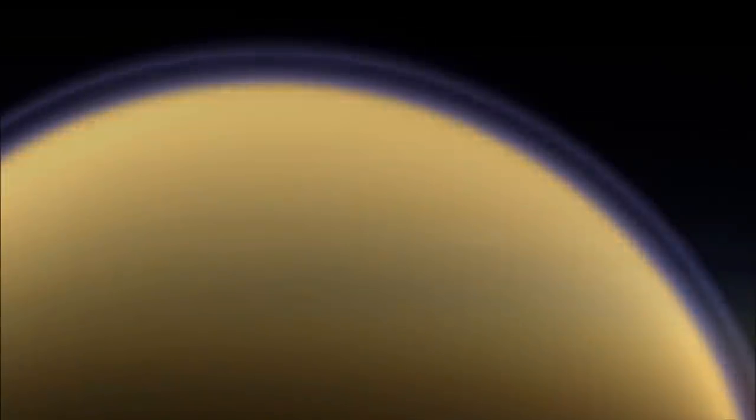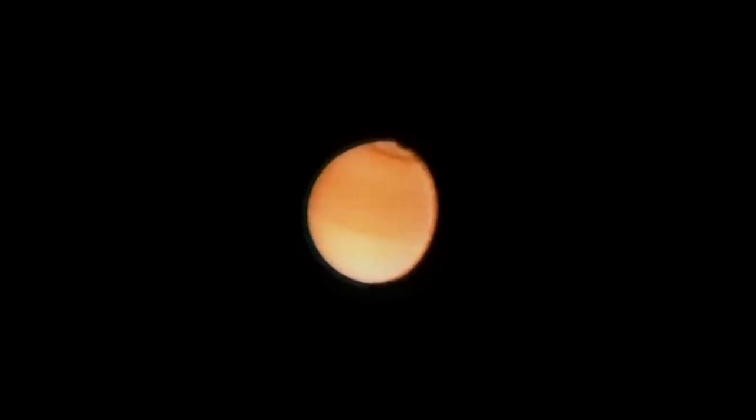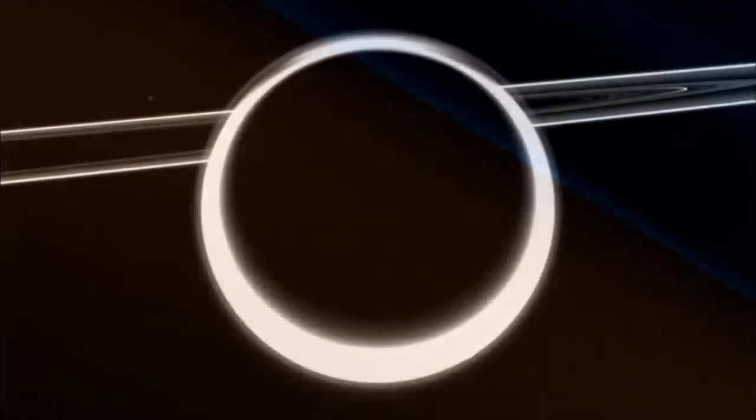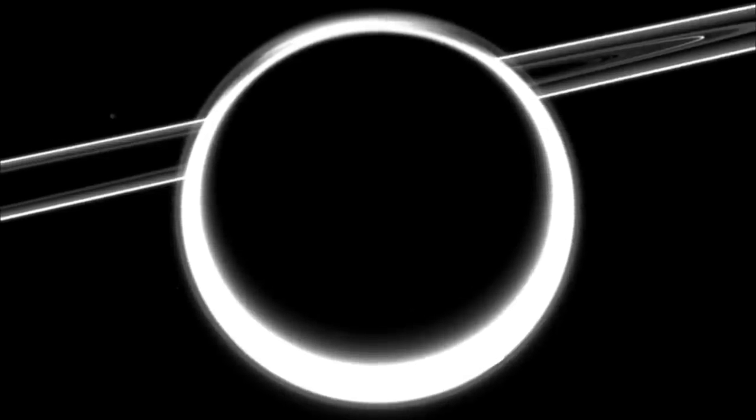Titan is the only moon in our solar system with a substantial atmosphere. When Voyager 1 arrived at Saturn in 1980, it found Titan shrouded by a thick orange haze. This haze is like a photochemical smog, produced when sunlight reacts with methane in Titan's atmosphere.